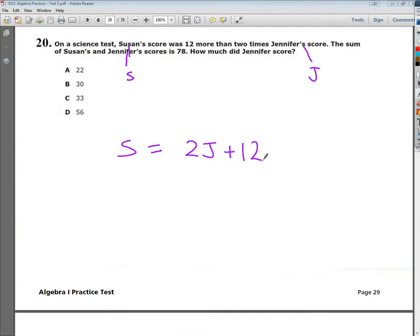The sum of Susan's and Jennifer's scores is 78. Sum is the mathematical term for addition. So J plus S is equal to 78. How much did Jennifer score?